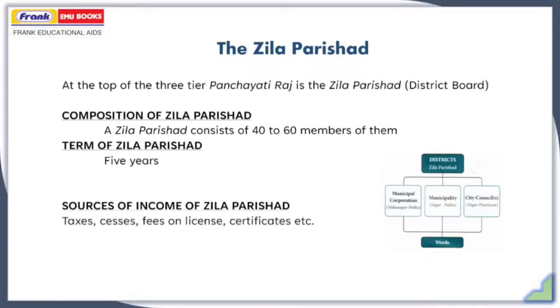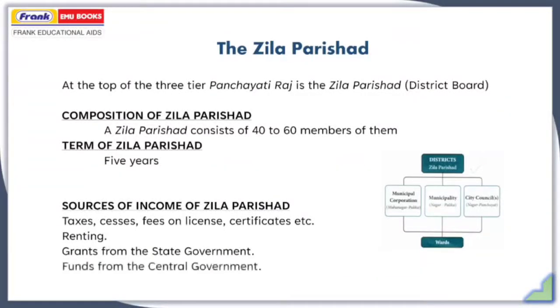The sources of income of Zilla Parishad include taxes, cesses, fees on licenses and certificates, renting, grants from the state government, and funds from the central government as well.